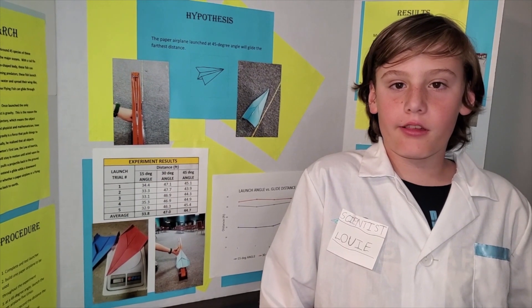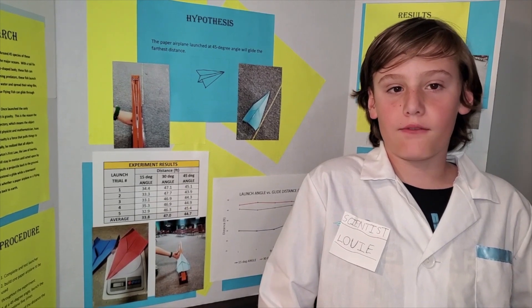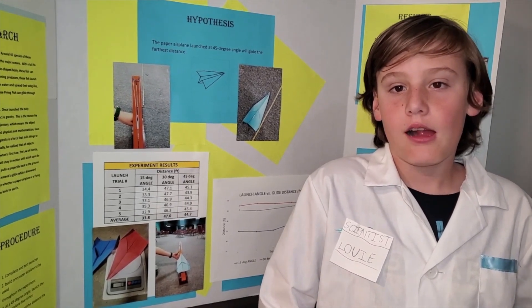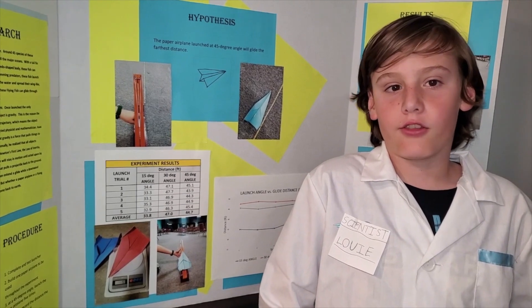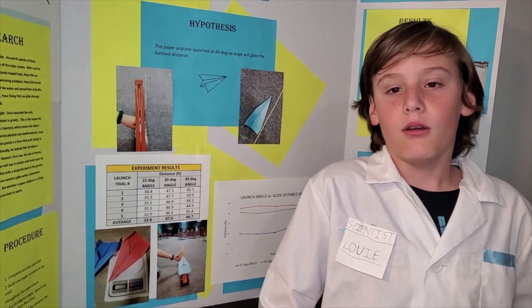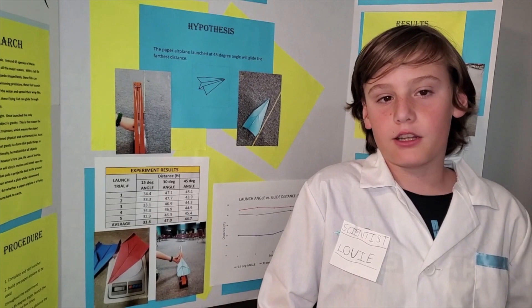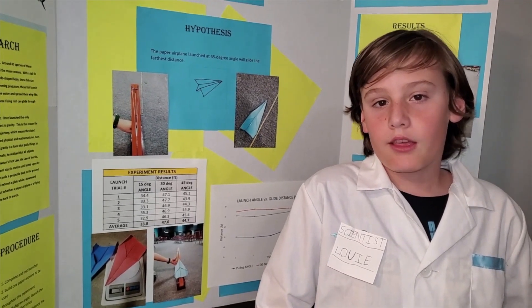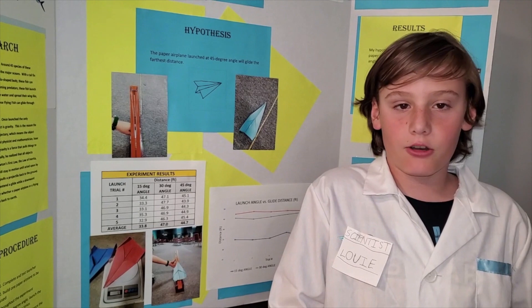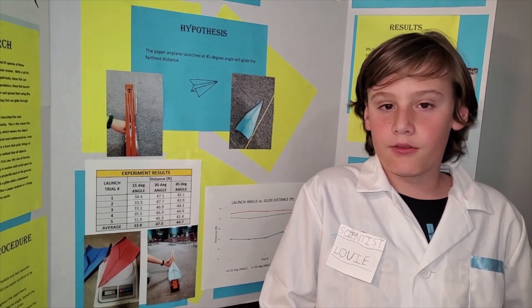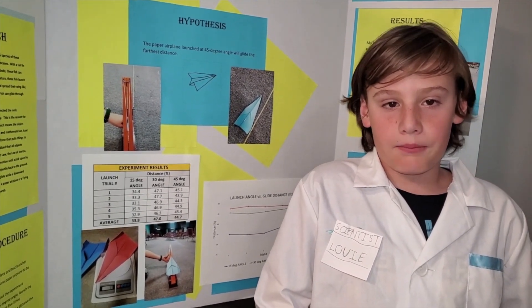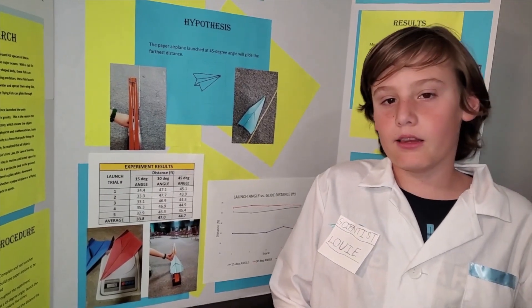My hypothesis is that the paper airplane launched at a 45 degree angle will glide the farthest. Having created a launch device, the force exerted on the paper airplane by the device's rubber band is my controlled variable. This force will be constant throughout the experiment. My independent variable will be the launch angle, and my dependent variable will be the glide distance.